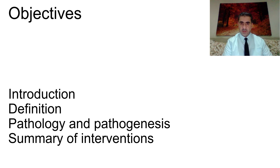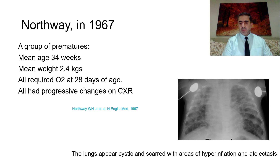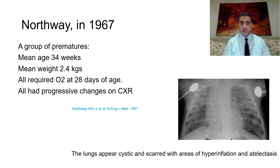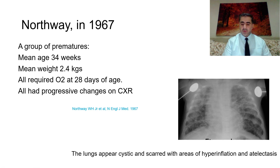Talking about the history of bronchopulmonary dysplasia, the definition started in 1967 by Northway, who defined a group of premature babies who required mechanical ventilation. At that time their mean age was 34 weeks gestation, their mean weight was 2.4 kilograms, and all of them required oxygen at 28 days of age. All of them had progressive changes on chest x-ray — the lungs appeared cystic and scarred with areas of hyperinflation. This was the first time bronchopulmonary dysplasia was described, solely because of use of mechanical ventilators in premature babies.